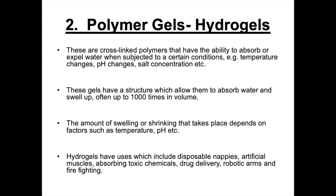The second type of smart polymers are polymer gels. An example of these are hydrogels. These are cross-linked polymers that have the ability to absorb or expel liquid when subjected to certain conditions — for example, temperature changes, pH changes, a change in salt concentration, etc. In the case of hydrogels, the liquid they're absorbing or expelling would be water. These gels have a structure which allows them to absorb liquid and swell up often to a thousand times in volume, and the amount of swelling or shrinking is dependent on factors such as temperature, pH, etc.